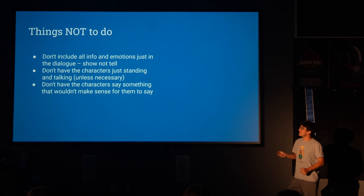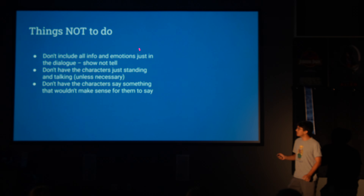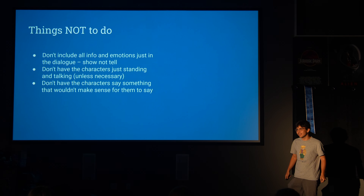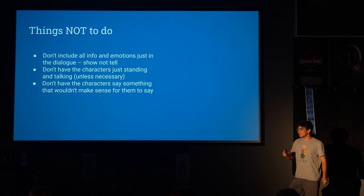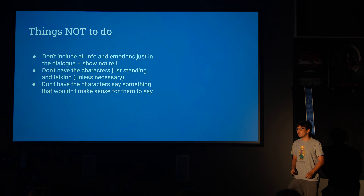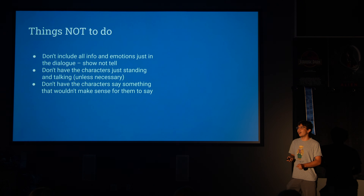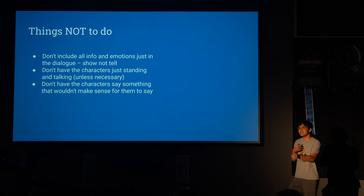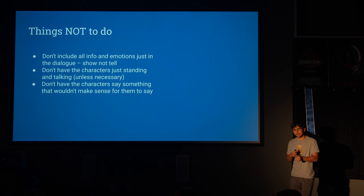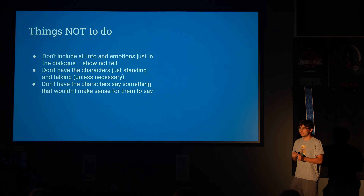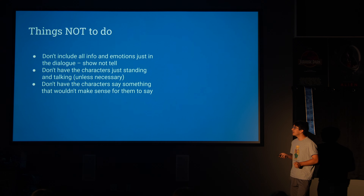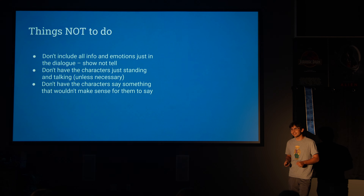These are things not to do. You don't want to include all the info and emotions just in the dialogue. As Mr. Taylor says: show, don't tell. Don't just include everything in words — show with characters' facials and emotions. There are ways you can edit to show emotion better, so you don't just have people blabbering all the time; that gets boring. That's also why you don't want to have characters just standing or sitting and talking — have them move around a little. Two people just talking is boring.